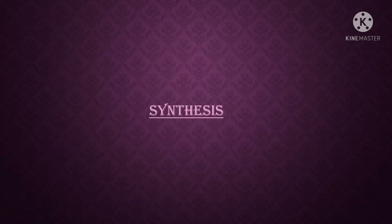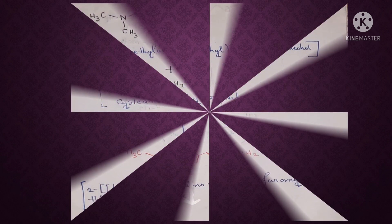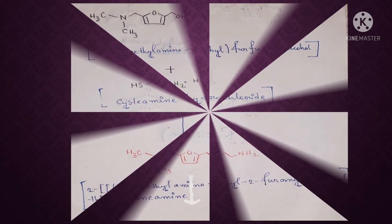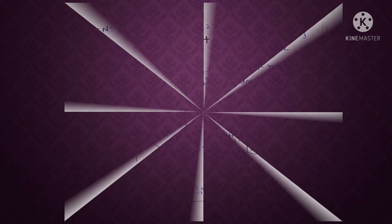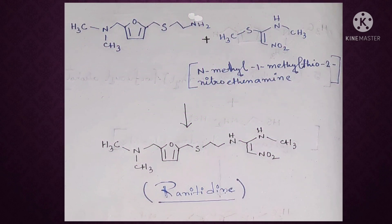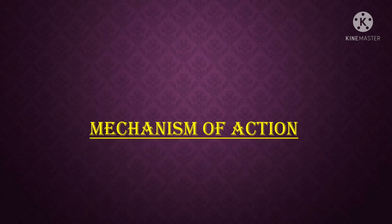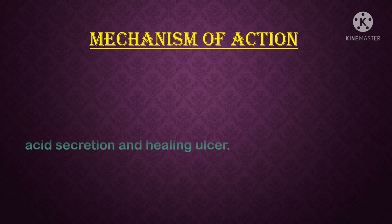The next important part is the synthesis of ranitidine. In the first step, 5-methylaminomethylfurfuryl alcohol is reacted with cysteamine hydrochloride to produce 2-(5-dimethylaminomethyl-2-furanylmethylthio)ethanamine. In the second step, this product is reacted with N-methyl-1-methyl-2-nitroethanamine to produce the major product, ranitidine.